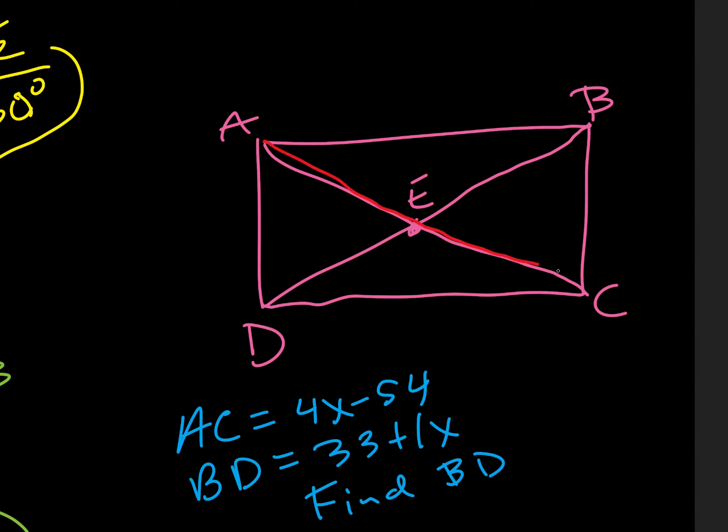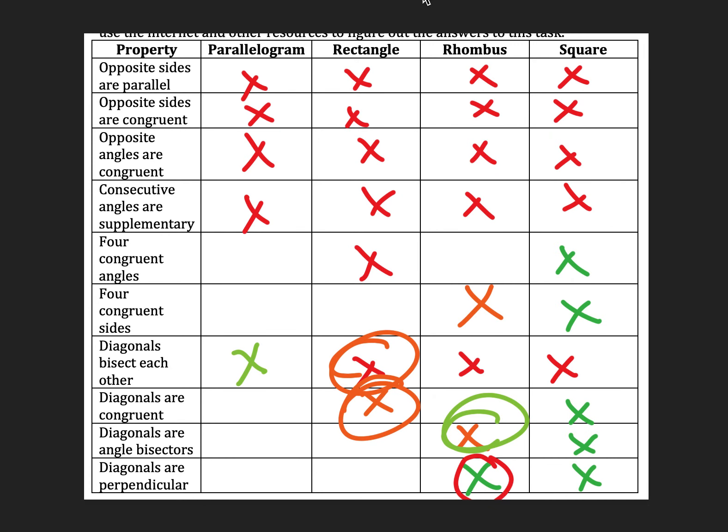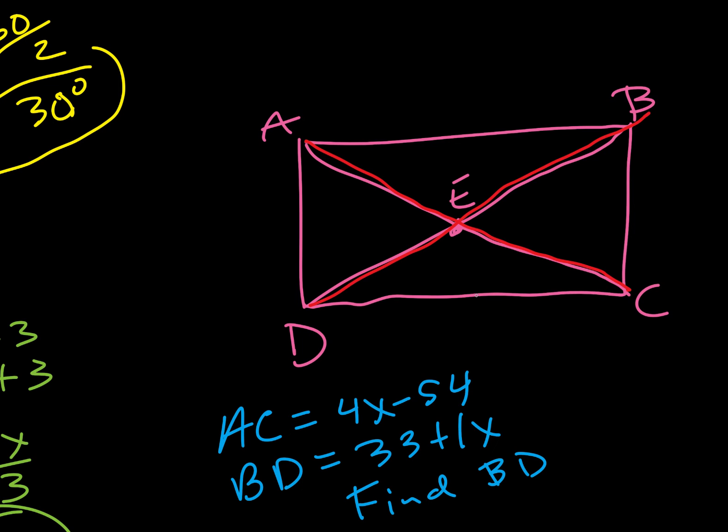So, since A, C is a diagonal, and since B, D is also a diagonal, a property of rectangles is that the diagonals are congruent right here. So, we can just set those equal to each other. So, we can say 4x minus 54 equals 33 plus 1x, or just x. And so, I can subtract the x's. I can add the 54. And that becomes 3x is equal to 87. Divide by 3. And x equals 29.